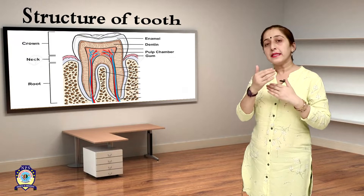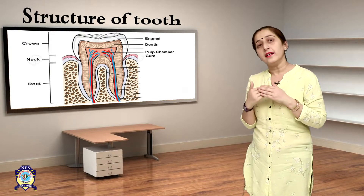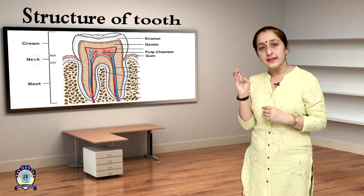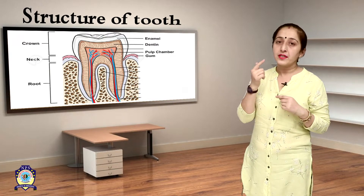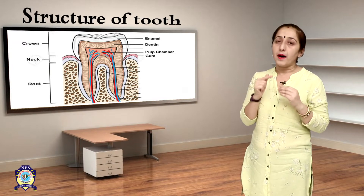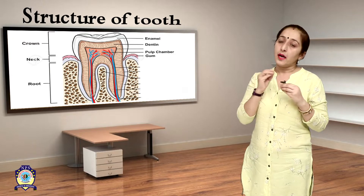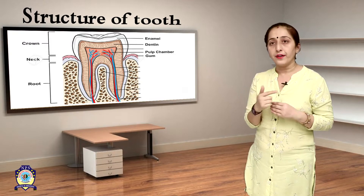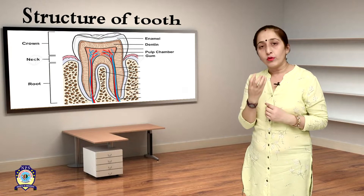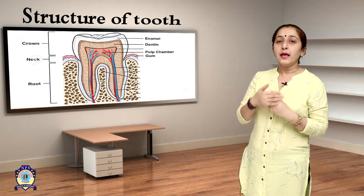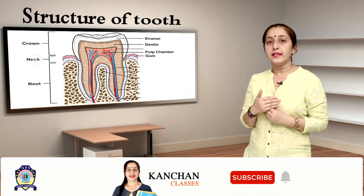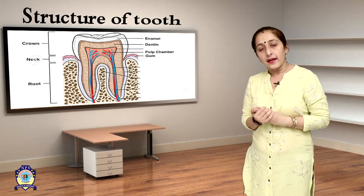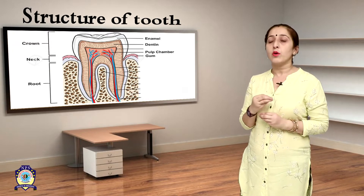The middle part of the tooth which is held in the gums is called the neck. The last part is the root, which is embedded in the gums. The hard outer covering of the tooth is called enamel, and the part which is below the enamel is called dentine.